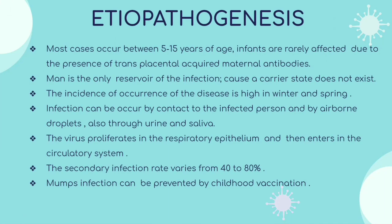Starting with etiopathogenesis: Most cases occur between 5 to 15 years of age. Infants are rarely affected due to the presence of transplacentally acquired maternal antibodies. Man is the only reservoir of infection, as a carrier state does not exist, so this infection can only be transmitted from one person to another. The incidence is high in winter and spring. Infection can occur by contact with an infected person, by airborne droplets, and also through urine and saliva.